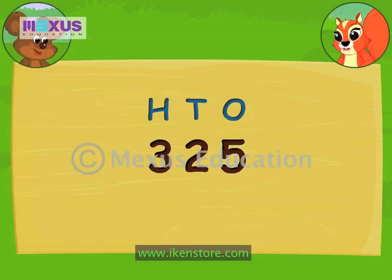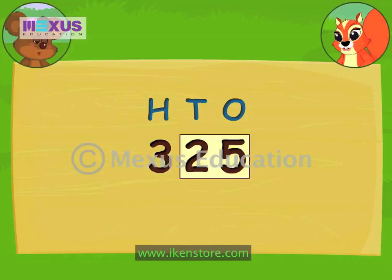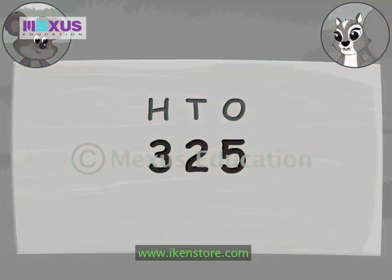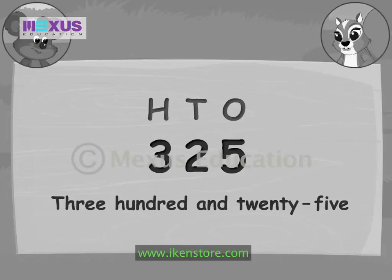That's right. Let us see how to read this number. The number in the hundreds place is 3. The last two numbers together are read as 25. So the number is 325. It is written as this.